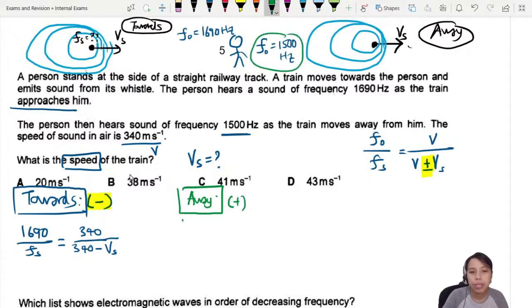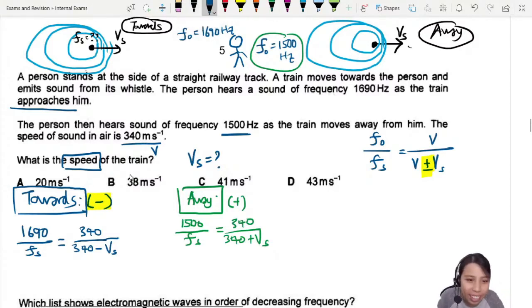So moving away will be 1500 divided by source frequency equals 340 over 340 plus v_s. Now we have two equations and two unknowns, we can solve v_s. This is simultaneous equations. This is equation one and the other is equation two. The math can be quite long, depending on how you use calculator or method.